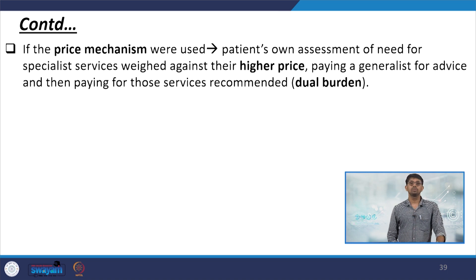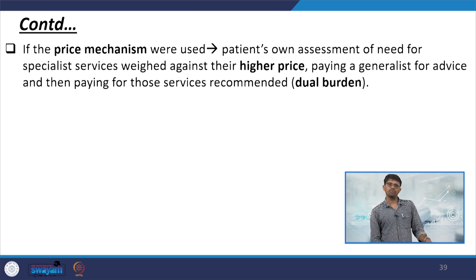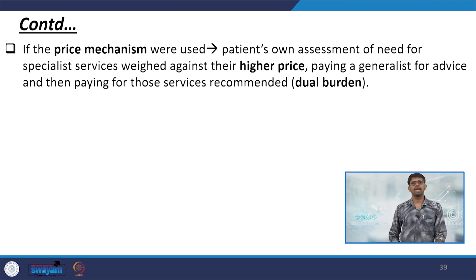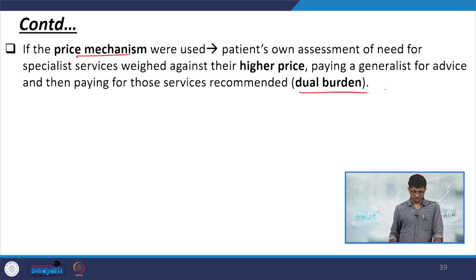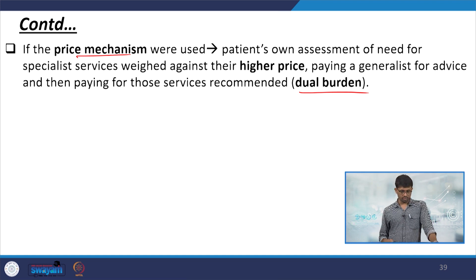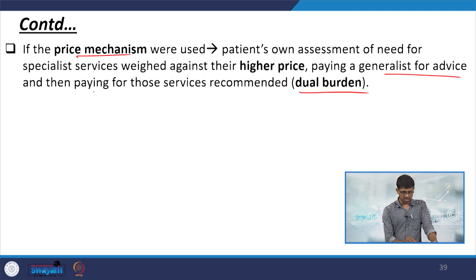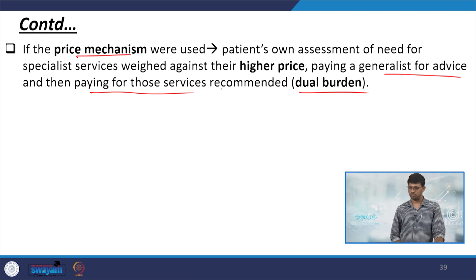If the price mechanism were used, patients' own assessment of need for specialist services would be weighed against the higher price of paying a generalist for advice and then paying for services recommended. This involves a dual burden — paying both for the generalist's assessment and for the specialist services. Hence it is attached with a dual burden.